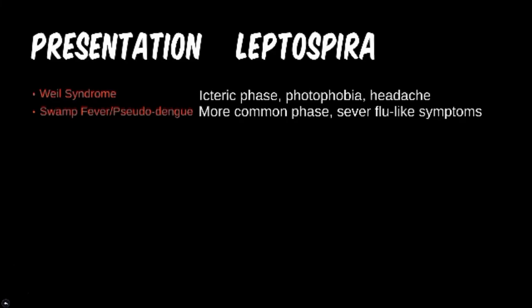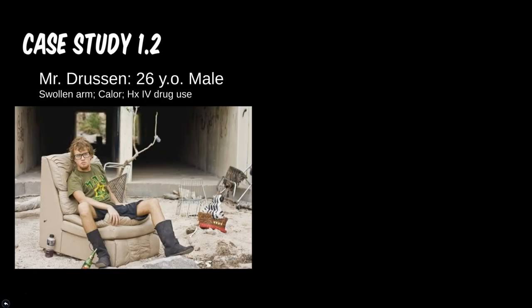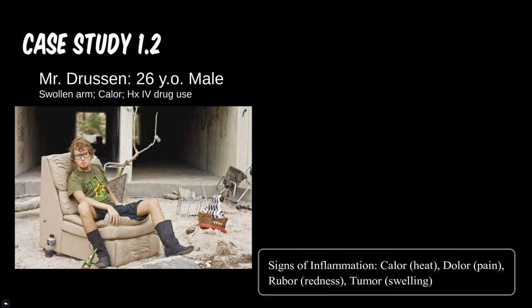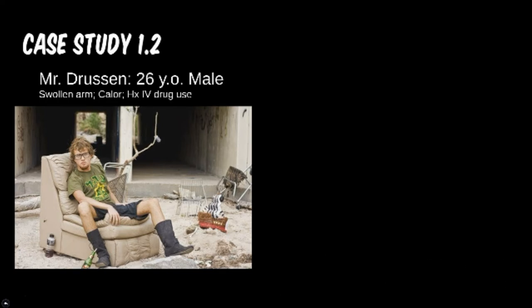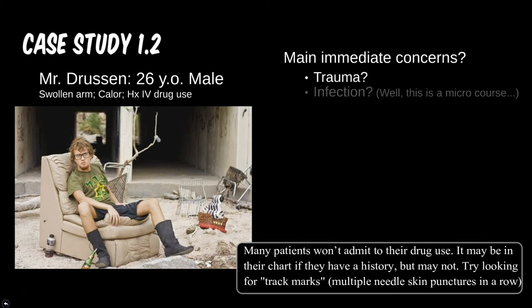Now let's recap the three cases from the previous tier. Case one was Mr. Drusen, a 26-year-old male who came to the emergency room with a swollen arm and a history of injection drug use. From the first complaint we know the arm is bothering him but we don't know why. We could consider a broken bone, but he doesn't mention recent trauma. The clue of intravenous drug use greatly limits what is at the top of our list for diseases.